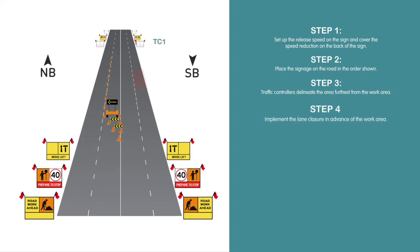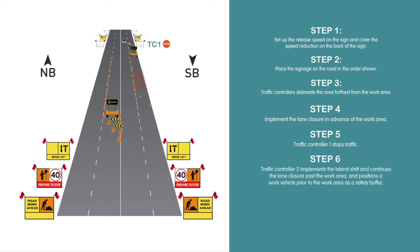Step 4: Implement the lane closure in advance of the work area. Step 5: Traffic controller number 1 stops traffic. Step 6: Traffic controller number 2 implements the lateral shift and continues the lane closure past the work area, and positions a vehicle prior to the work area as a safety buffer.